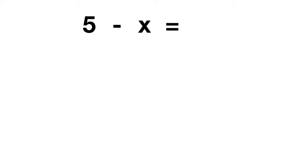Let's look at another problem: 5 minus x equals 7. Before we do anything else, let's talk about what that minus x really means. Even though there's no number next to the x, it's showing us that it's minus 1x. We can imagine an invisible 1 being in this equation.